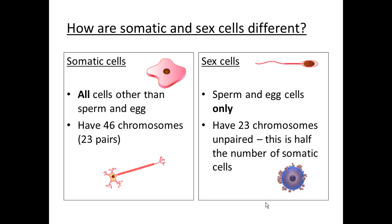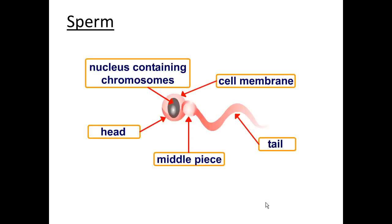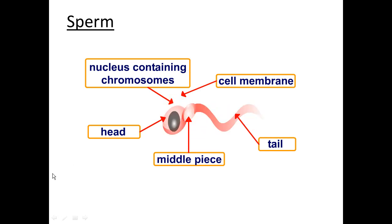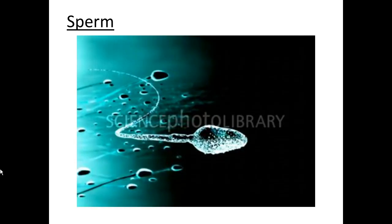Sex cells are related to sexual reproduction, which we will see in a minute. Today we are going to focus a bit more on sex cells. In human beings we have two different kinds of sex cells. In males we have sperm, which has a head containing the nucleus with chromosomes, a middle section, and a tail that helps the sperm move forward. This is how a sperm cell actually looks through a microscope.